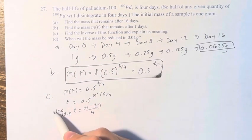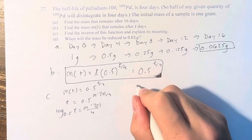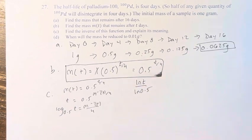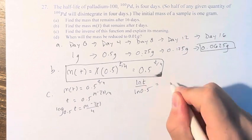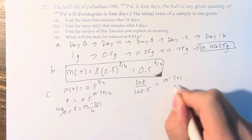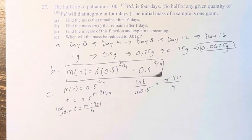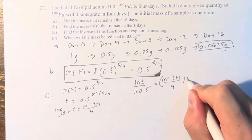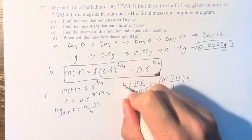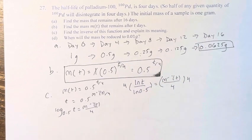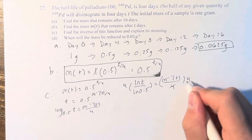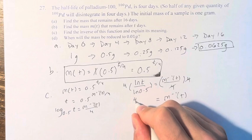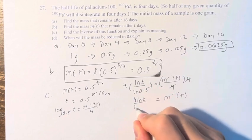Over here, we have log base 0.5 of t. This is equal to ln(t) over ln(0.5). We do this because it's easier to deal with the natural log than log base 0.5. And to solve for the inverse function, we'd just have to multiply both sides by 4. So this cancels, and then we'll have that the inverse function of m is equal to 4 ln(t) over ln(0.5).